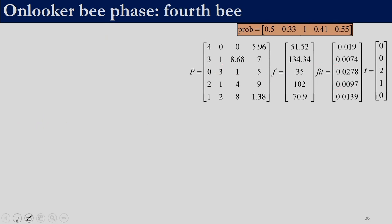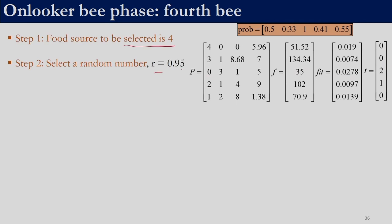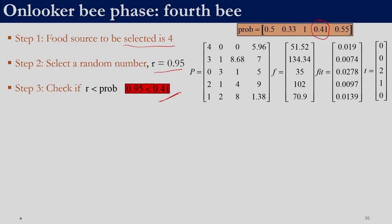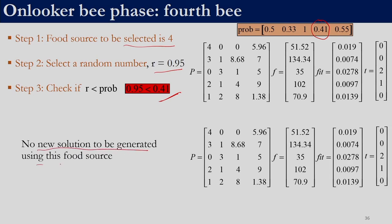For the fourth food source, with random number 0.95 compared against probability 0.41, the condition is not satisfied. No new solution is generated. The fourth bee does not exploit food source 4 — we should neither reset the trial counter to 0 nor increase it by 1. We only increase the trial counter when a solution was generated and failed; we reset to 0 only if the new solution is better. Since [2,1,4,9] was not even able to generate a solution, the trial vector is not updated.